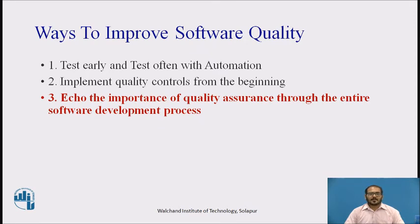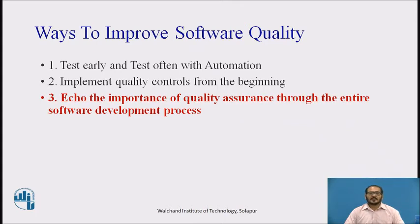The next way to improve software quality is to echo the importance of quality assurance through the entire software development process. Testing is important at the beginning, but it does not stop there — quality assurance should be ever present throughout the software development process. Quality assurance is a governance provided by the project team that instills confidence in the overall software quality, and assurance testing oversees and validates the processes used to deliver outcomes, ensuring they are tracked and functioning.